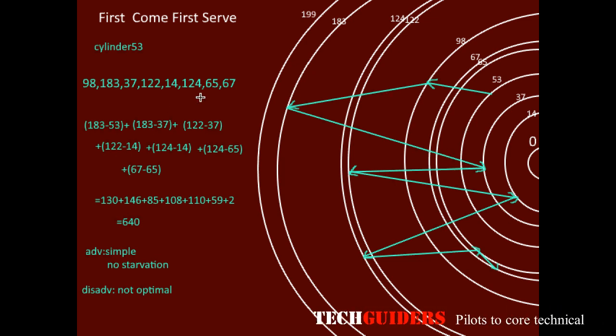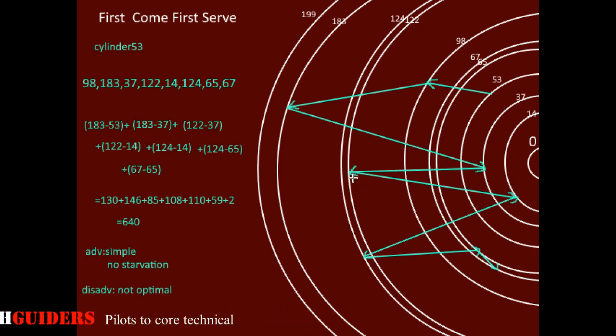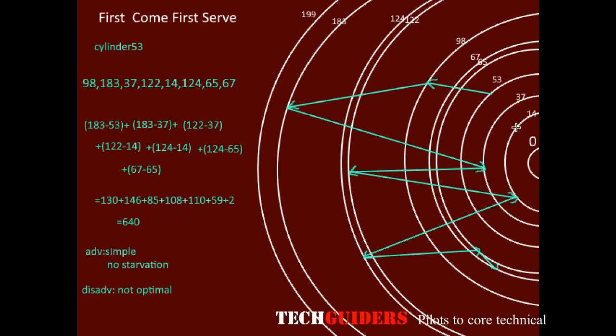In this example itself, after servicing the request on cylinder 122, the request on the nearby cylinder 124 is pending. Even then the head changes direction, moves across all these cylinders, then comes back to cylinder number 124 to service the request on it. If it had been served near cylinder number 122, the overall seek time could have been reduced.